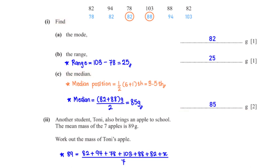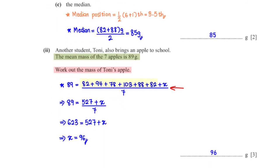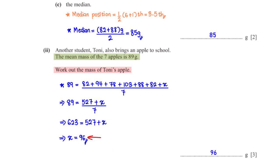Another student, Tony, also brings an apple. The mean mass of the seven apples is 89 grams. Work out the mass of Tony's apple. Let x represent Tony's apple mass. Setting up the mean equation: (82 + 94 + 78 + 103 + 88 + 82 + x) ÷ 7 equals 89. The sum of the known masses is 527. Multiplying both sides by 7 and subtracting 527 gives x equals 96 grams.